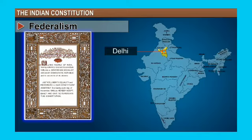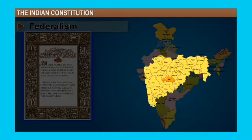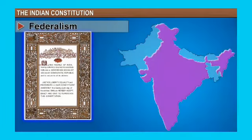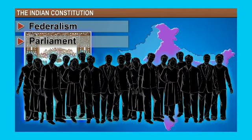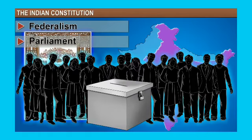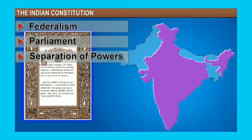Now listen carefully about key features of the Indian Constitution. One is federalism. Our Parliament is located in Delhi. In every state they have a state government located in the state capital. In Parliament, MPs — Members of Parliament — are there. Some MPs are elected by the people directly, some are elected indirectly. There are two houses: upper house and lower house.